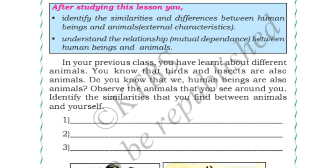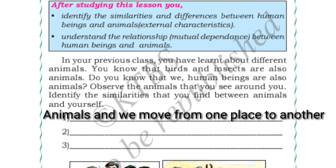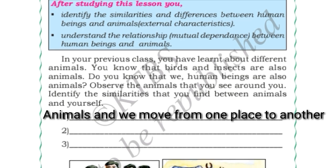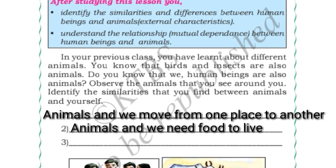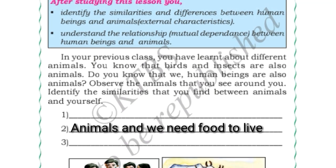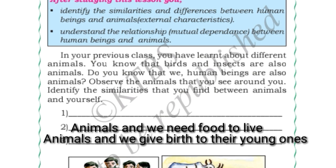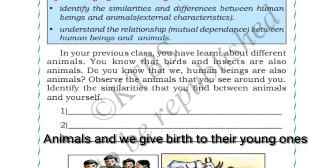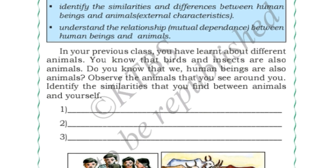So what is the common thing we find between ourselves and animals? Animals and we move from one place to another place. Animals and we need food to live. Animals and we give birth to young ones. So like this, some of the similarities are there between animals and ourselves.